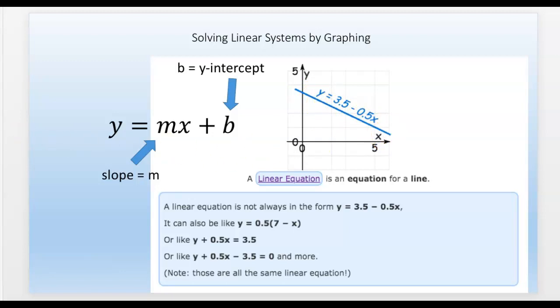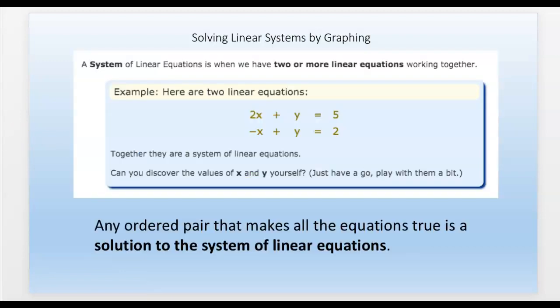A system of linear equations is when you have two or more linear equations working together. Here's an example with two linear equations — together they form a system of linear equations. The ordered pair (x, y) that makes all those equations true is the solution to that system.